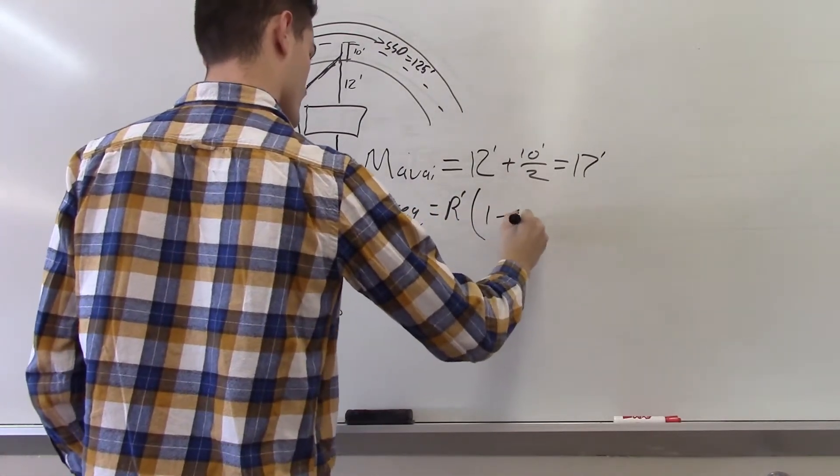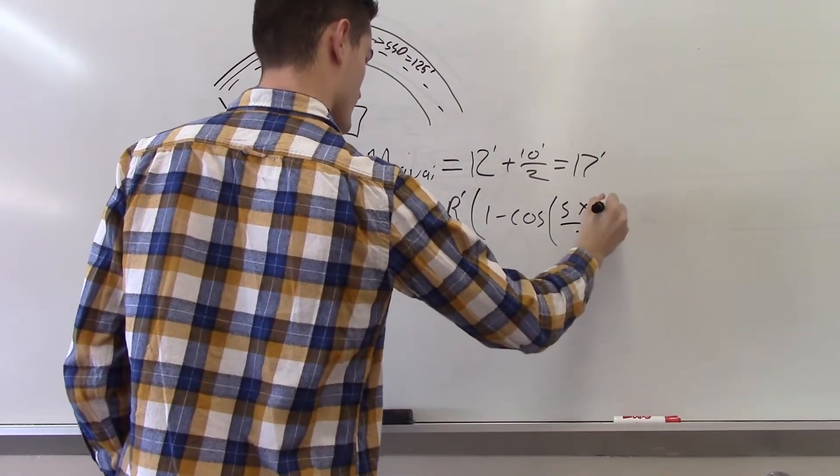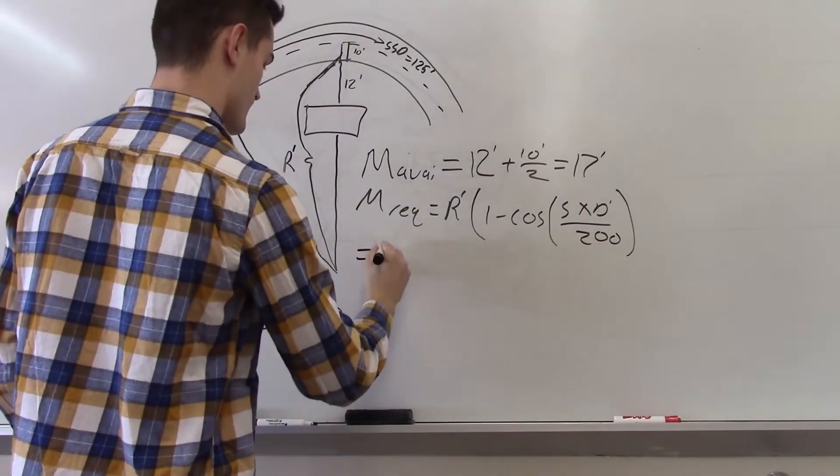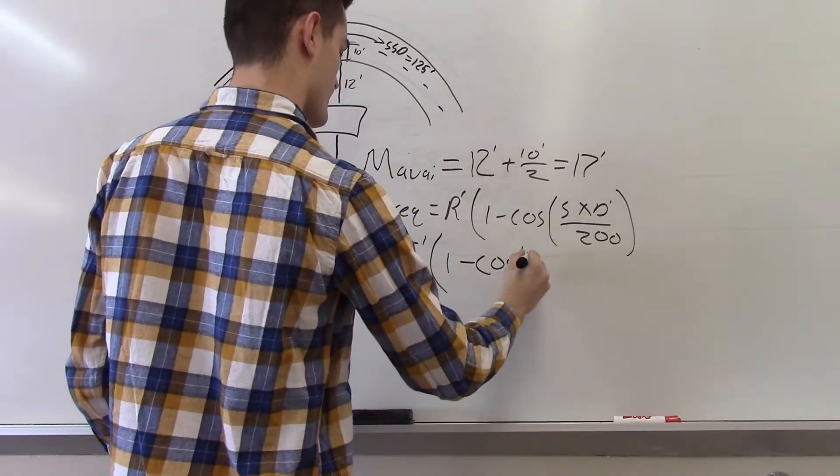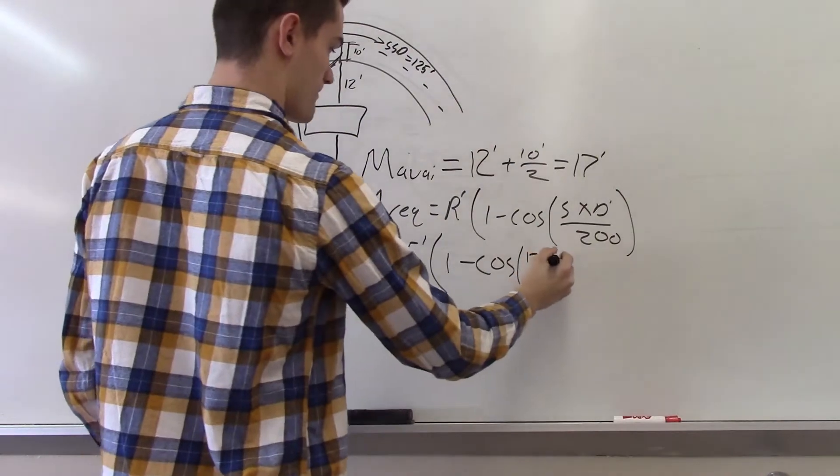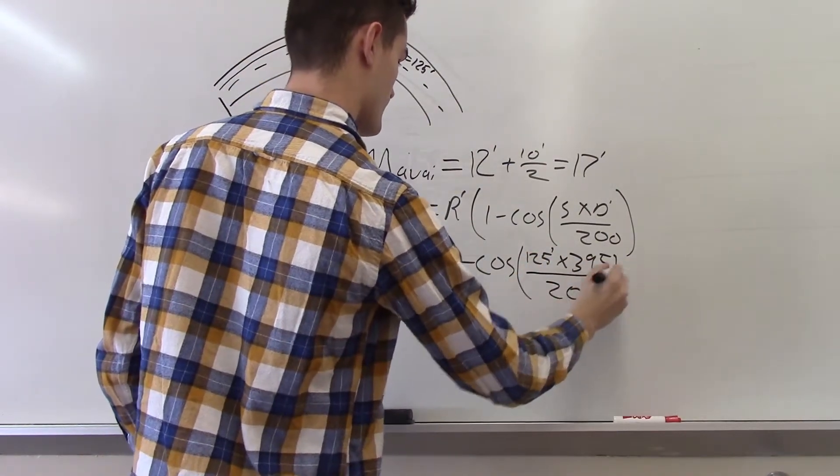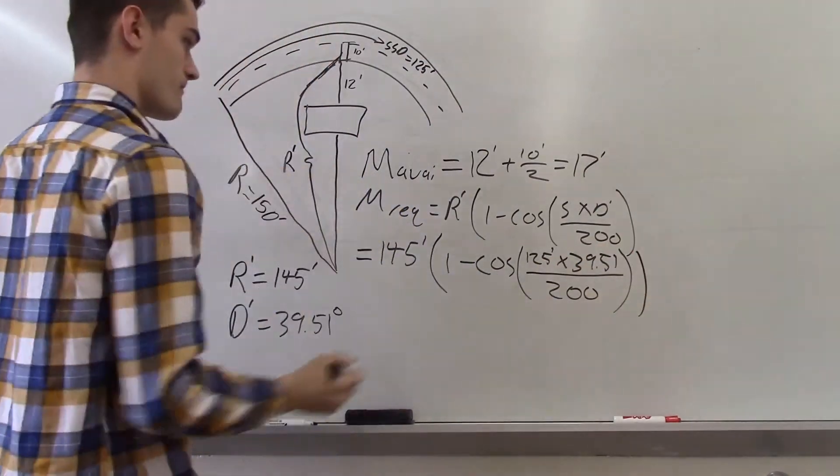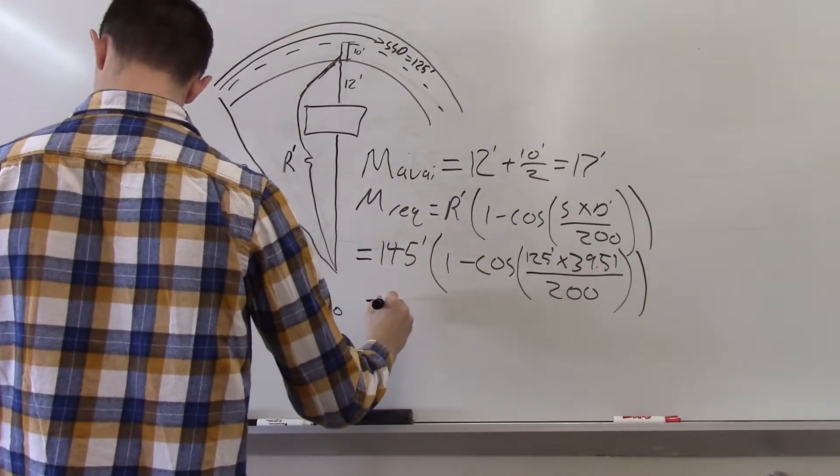Now, we are able to plug the values into the original equation and solve for M required. This comes out to be 13.25 feet.